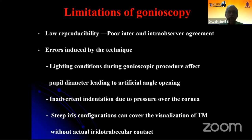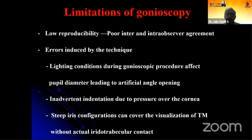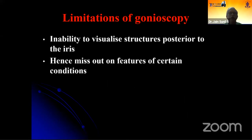Though gonioscopy is a gold standard, there are certain limitations as with any technique: less reproducibility, errors induced by the technique because of light conditions, sometimes inability to visualize the angle structures, and because of corneal indentation the folds might cause the angle structures not to be visualized clearly. There is also the inability to visualize structures posterior to the iris.